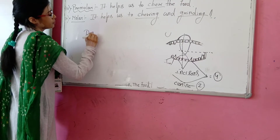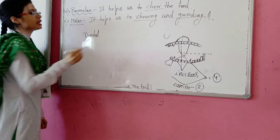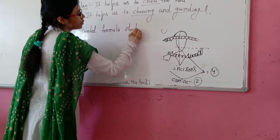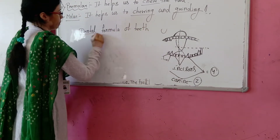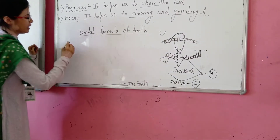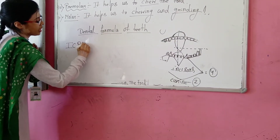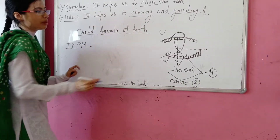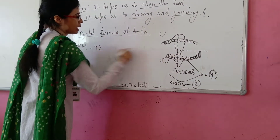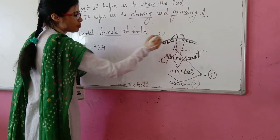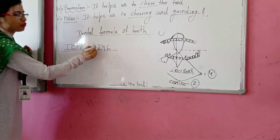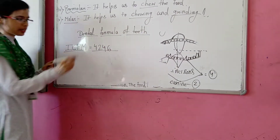Dental formula: there are four types of teeth and they have a dental formula. I for incisor, C for canine, P for premolar, M for molar. I = 4, C = 2, P = 4, M = 6. Total: 32 teeth.